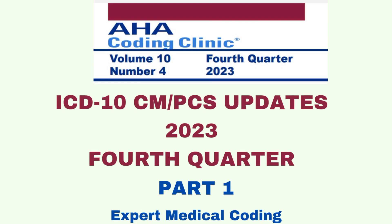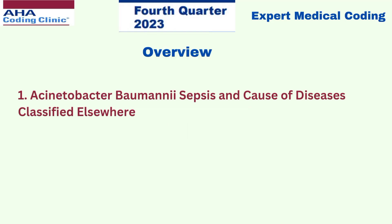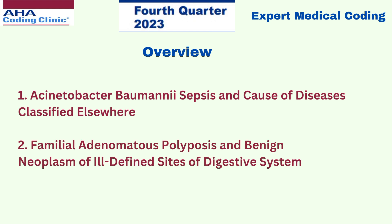Hello friends, welcome to Expert Medical Coding. In today's video, we are going to learn about ICD-10-CM-PCS Update 2023 4th Quarter Part 1. In this video, we are going to cover two coding clinics. The first one is Acinetobacter baumannii sepsis and cause of diseases classified elsewhere, and the second one is familial adenomatous polyposis and benign neoplasm of ill-defined sites of digestive systems.